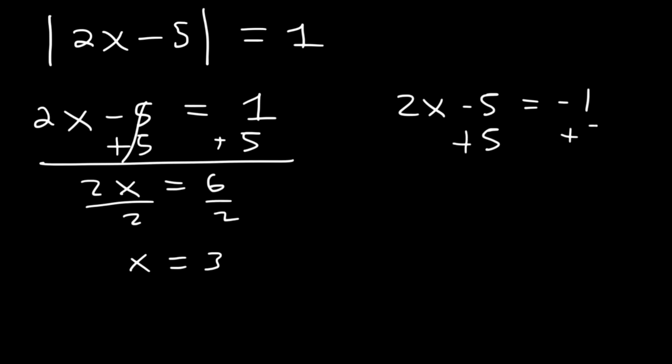And in the other example, let's add 5 to both sides. Negative 1 plus 5 is 4. And then divide by 2. x is 2.